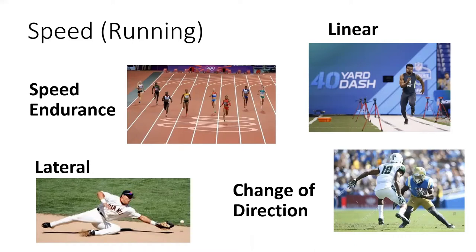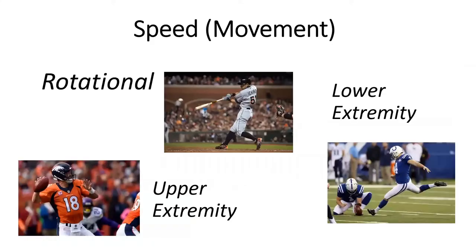Acceleration is going to be more necessary within field sports and really plays a role in change of direction. Lateral speed is the ability to move not in the sagittal plane — moving side to side maximally. We can also look at speed in terms of movement-pattern specifics: rotational, lower extremity, and upper extremity speed. A cricket or baseball player will require rotational speed, a punter or field goal kicker needs lower extremity speed, and a quarterback or water polo player needs upper extremity speed.